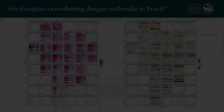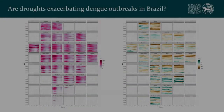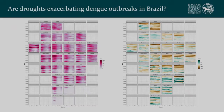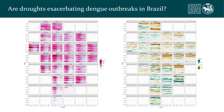One of our active research areas is trying to understand if droughts might be exacerbating dengue risk in Brazil. Some of our previous research found a link between drought conditions followed by warm and wet conditions creating the optimum conditions for dengue outbreaks in Barbados.